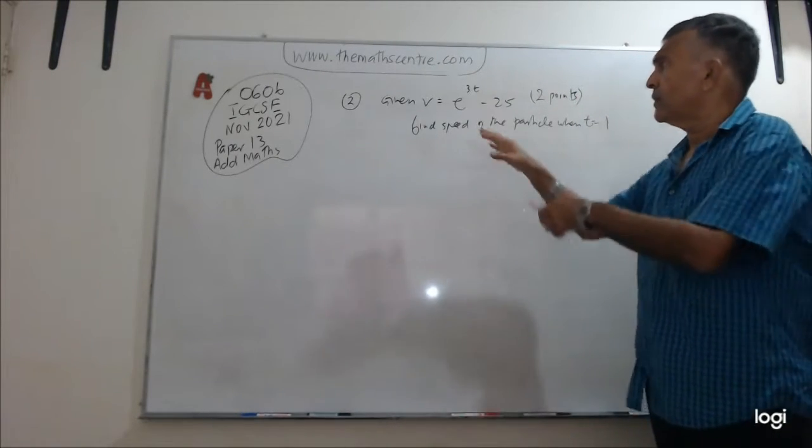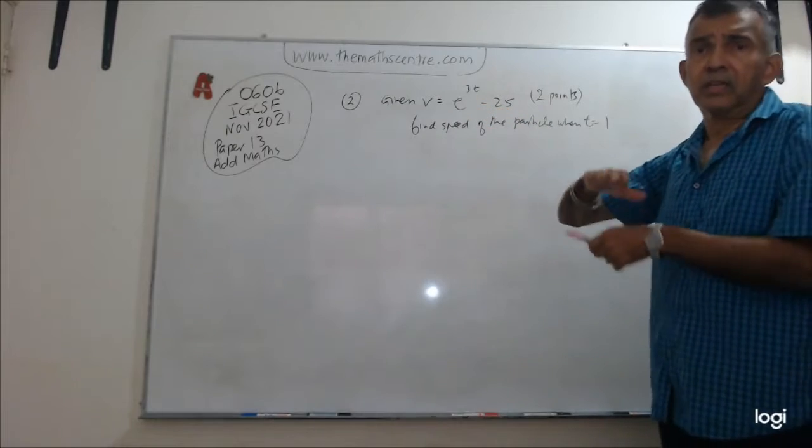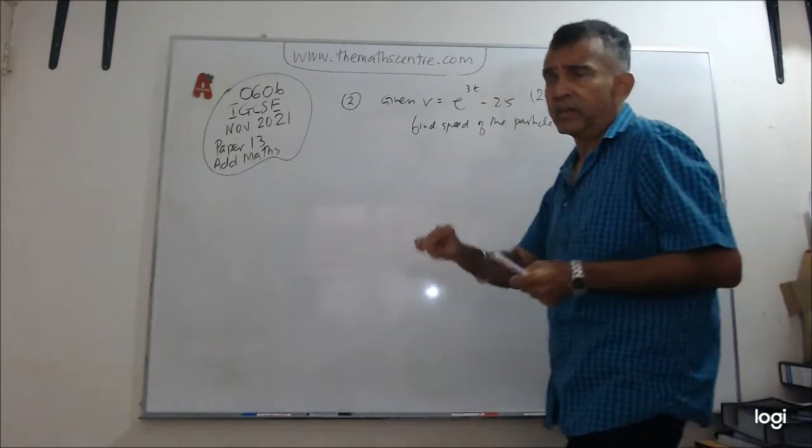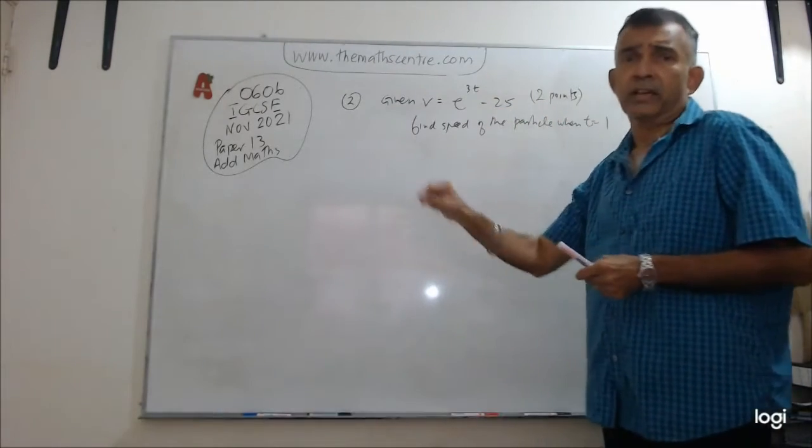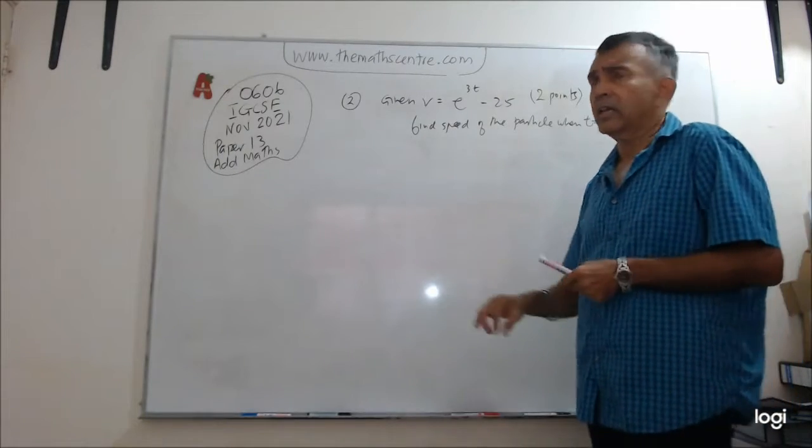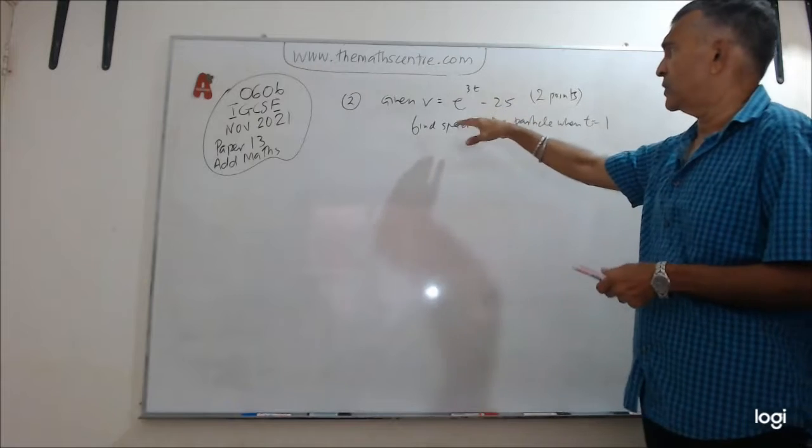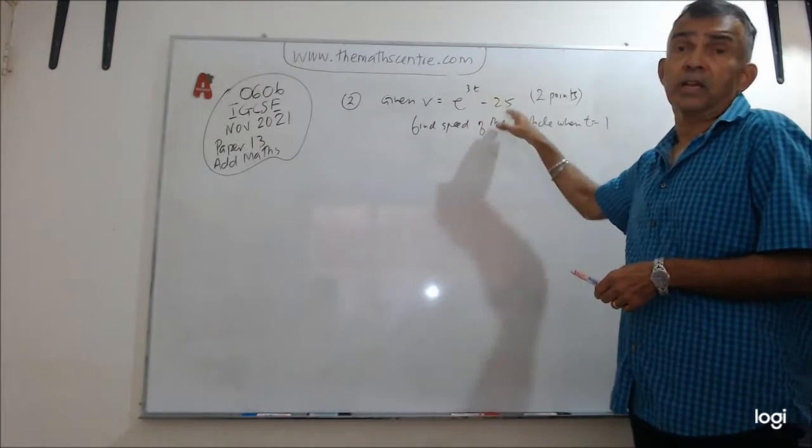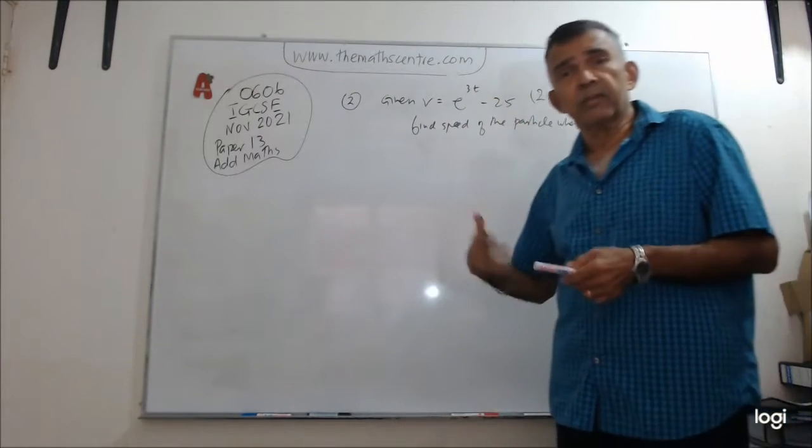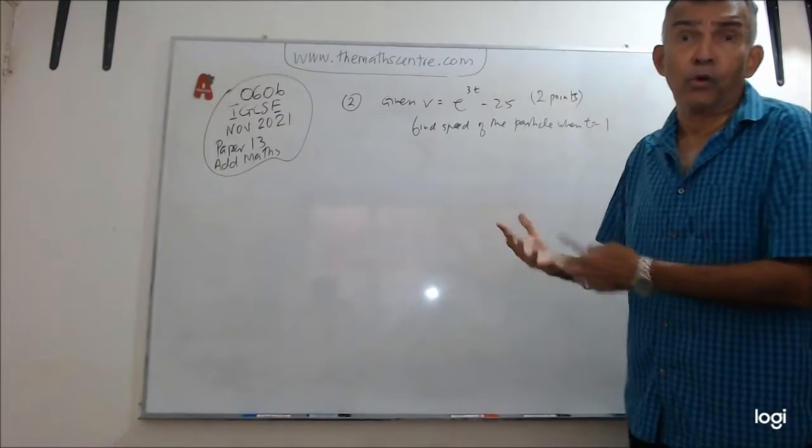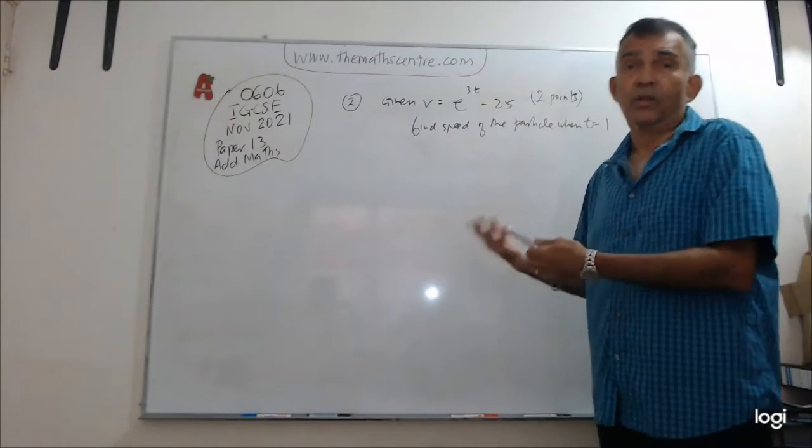Here in this problem, I've given you a velocity function here, but the question has more detail. An object moves along a straight line, and you're given the velocity function V, which is e to the power of 3t minus 25, and t is the time in seconds after passing a fixed point O. You know how it sounds, right?